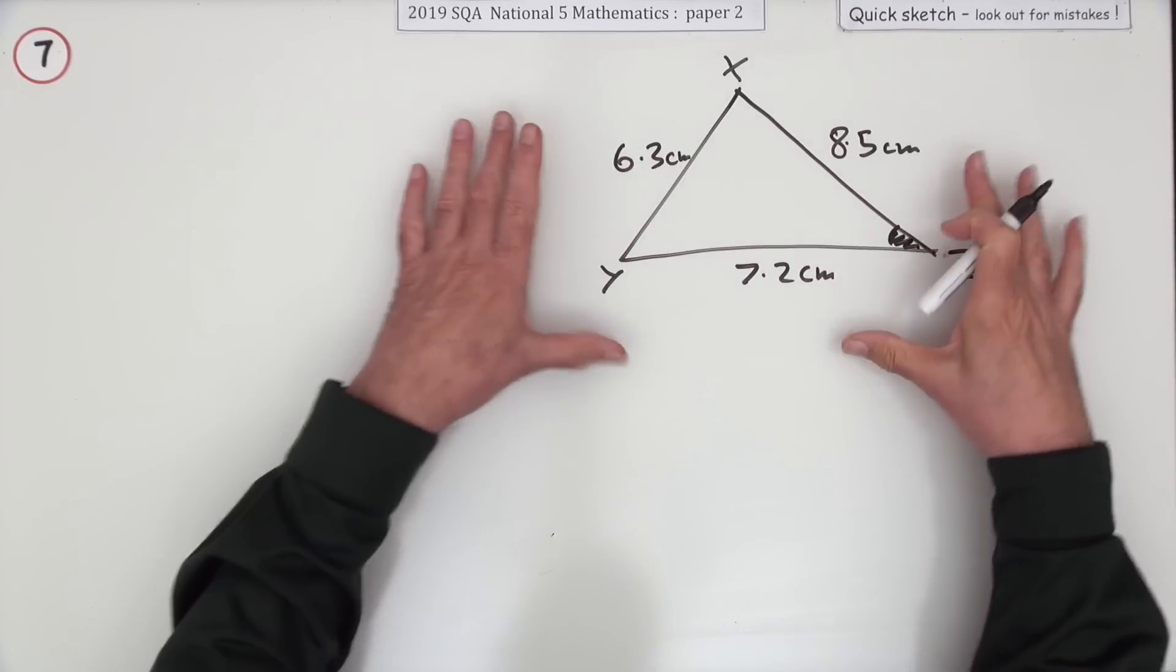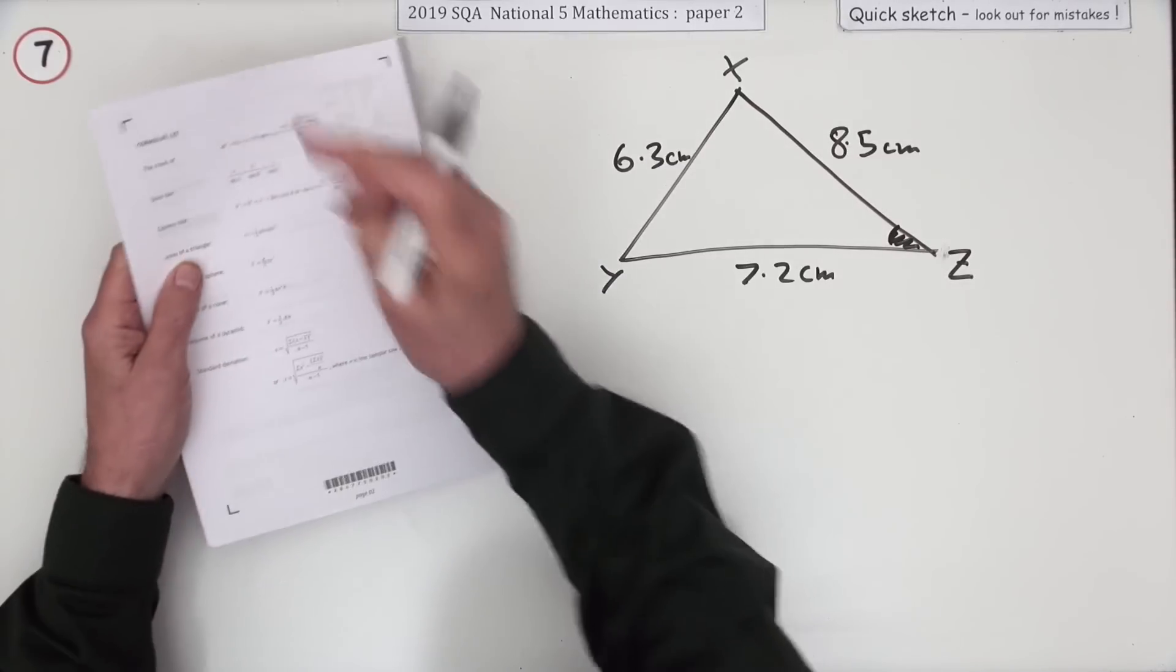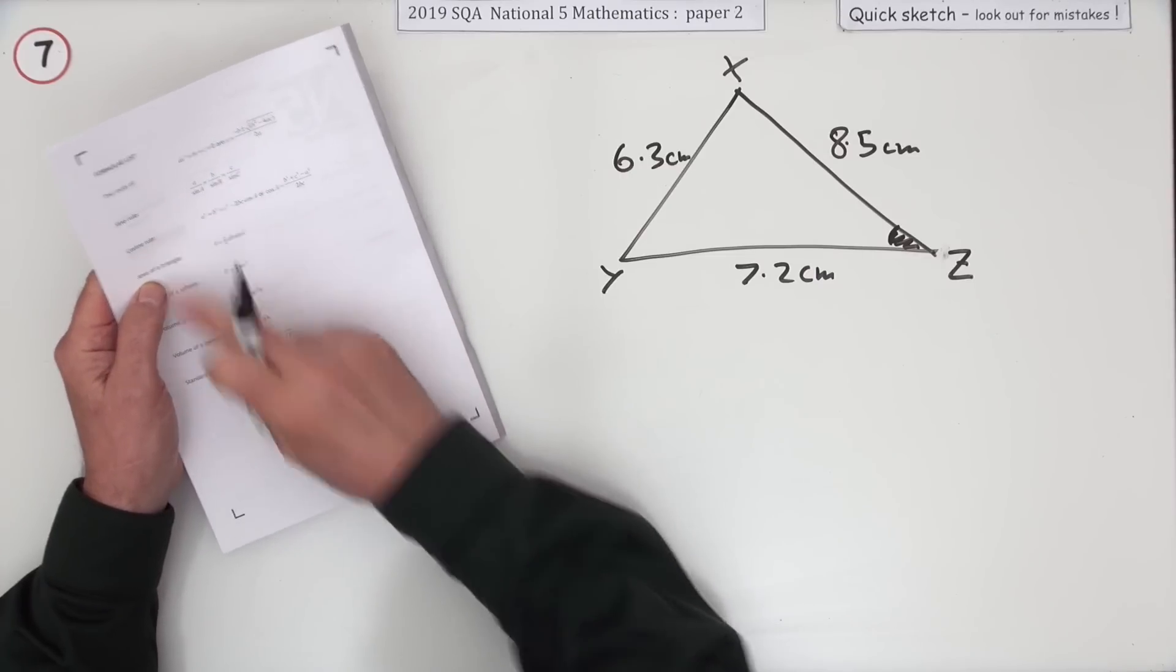Without any angles inside it, that'll be the cosine rule you're using. You can check at the front there. You've got the various formulas. You want this one, the cosine rule.